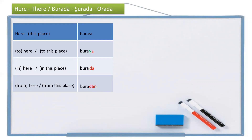Now let's see some examples to clarify. Here is a bank — this place is a bank. How am I going to say it? Here — burası, this place — bir banka. So: burası bir banka. Here is a bank, this place is a bank: burası bir banka.